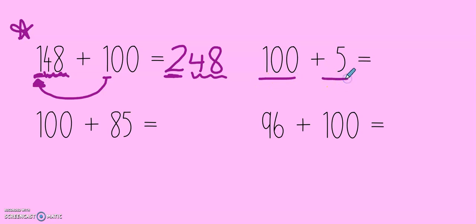100 plus 5. Oh, let's see. So 5 is in the ones place. I'm going to drag it here to the ones place. I don't have any ones. So I can just plop it right in. I got to keep my 100. I had 0 tens. And I just moved the 5 ones over.